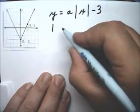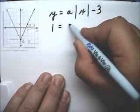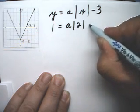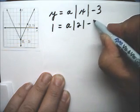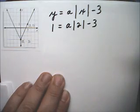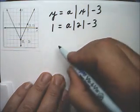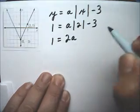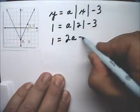So 1 is equal to a times the Absolute Value of 2 minus 3. The Absolute Value of 2 is 2. So this becomes 1 equals 2a minus 3.